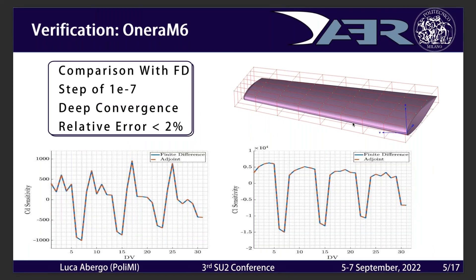We need to verify that the sensitivity obtained from the discrete adjoint with the new mesh deformation technique is reliable. We compare results with a finite difference technique and found that a step of 10⁻⁷ is reliable for finite differences. We performed the verification directly in 3D with the ONERA M6 wing in transonic conditions, requiring deep convergence for both the direct and adjoint simulations. As you can see, the two lines almost perfectly match, with a relative error lower than 2% for both drag and lift coefficient sensitivities.